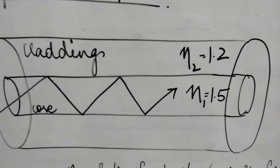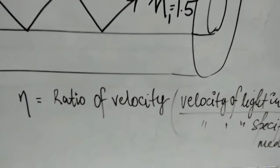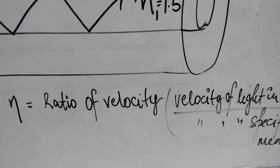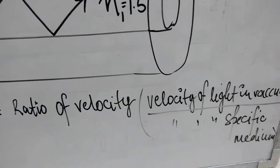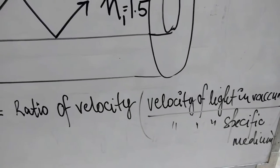So what is refractive index? You can note it down. It is basically a ratio of velocity of light in vacuum to that of a specific medium.